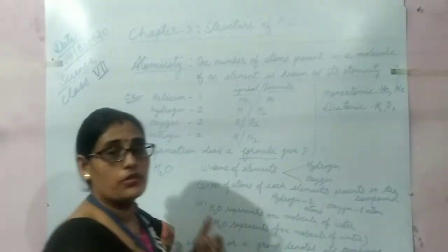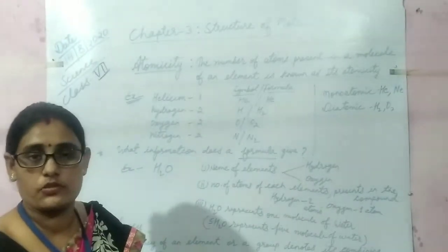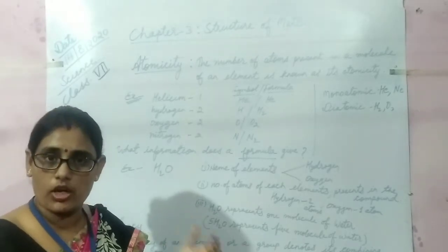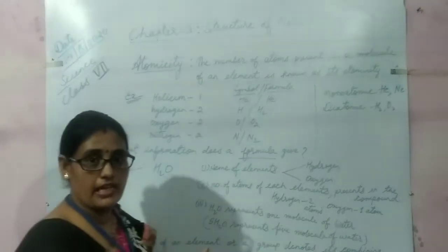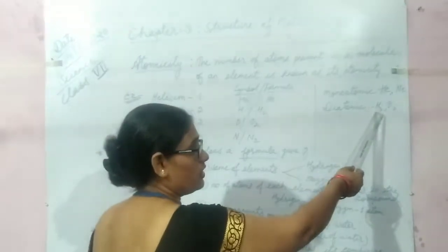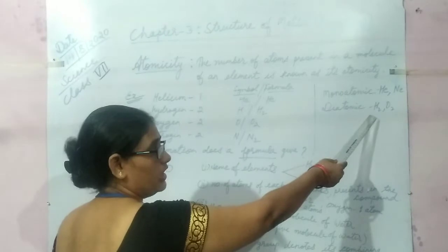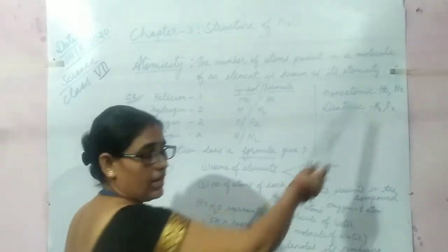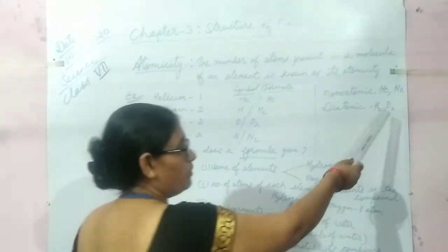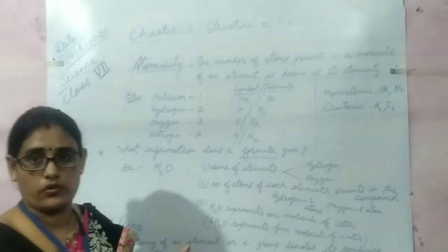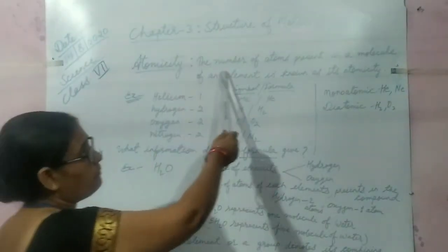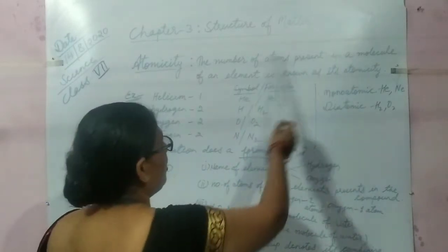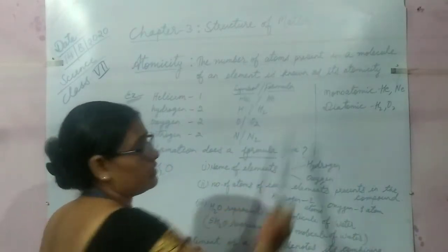But the atoms of most elements do not exist freely in nature. They always form molecules containing two or more atoms, so they are known as diatomic. For example, hydrogen H2 means one molecule of hydrogen contains two atoms. Similarly, oxygen, nitrogen, chlorine, etc. Atomicity means the number of atoms present in a molecule of an element.